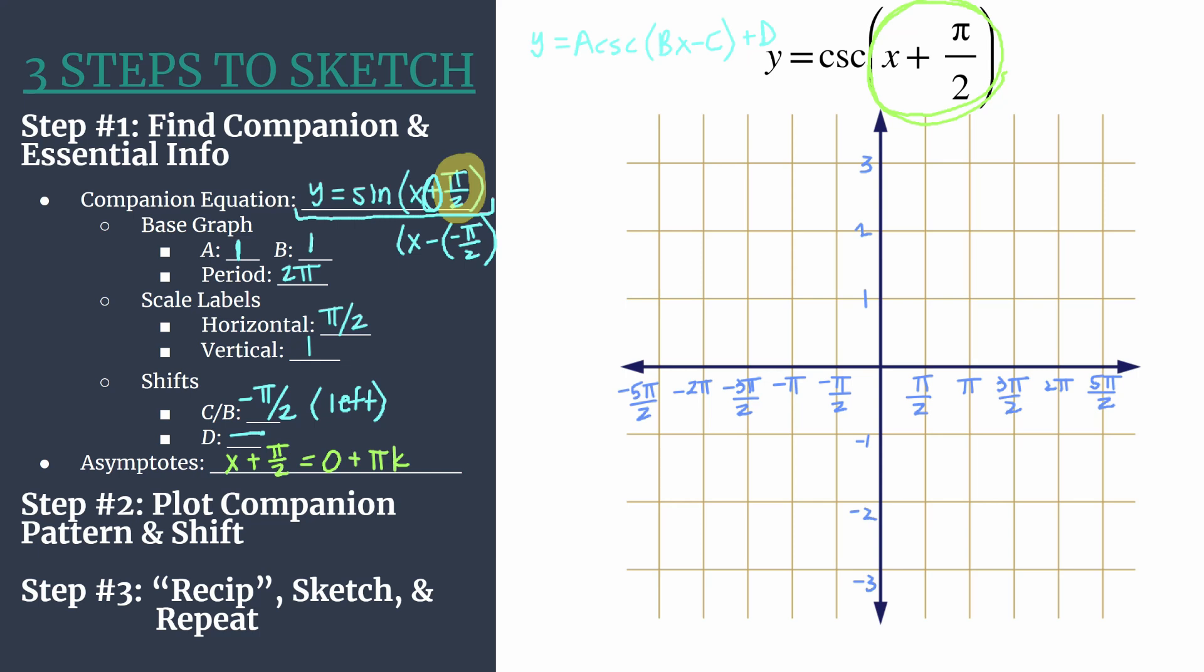Substituting in different integers will get you different asymptotes. But all we have to do from here is isolate the x. So subtract pi over two from both sides and we'll find, if we subtract pi over two from both sides, we end up with x equals negative pi over two plus pi K. That term doesn't change because it's not a like term. And this is our asymptotes equation.